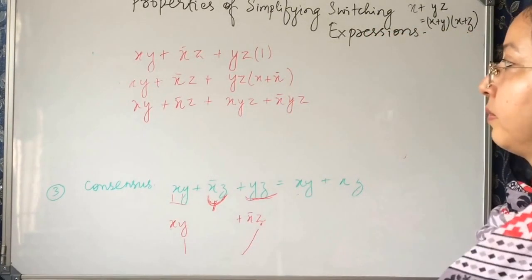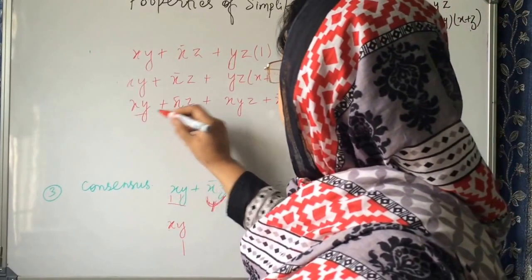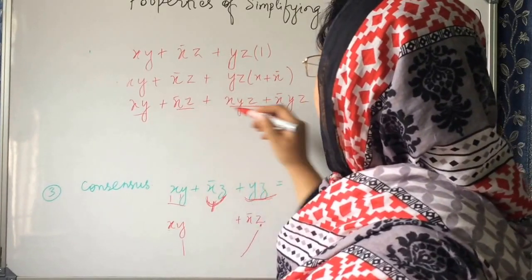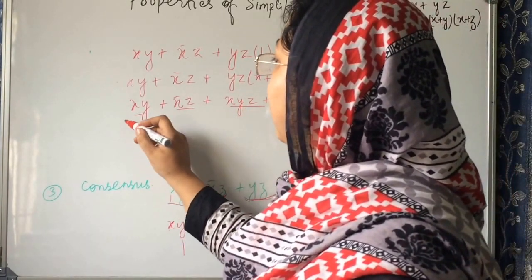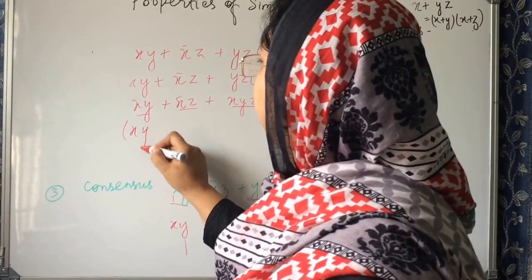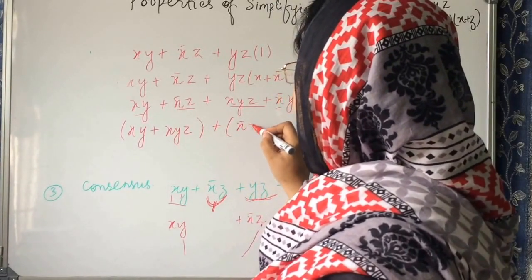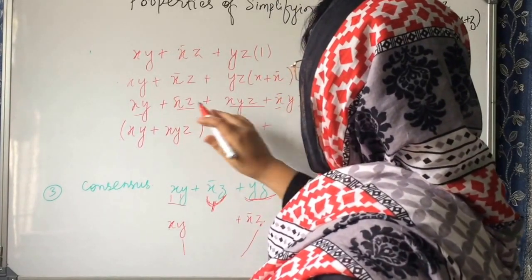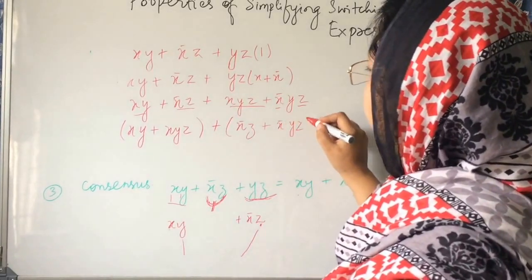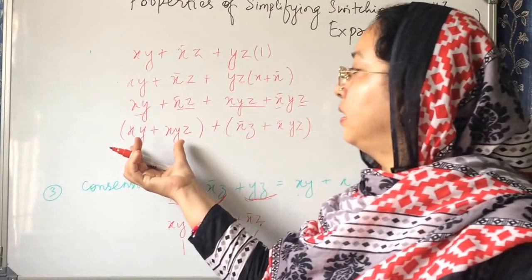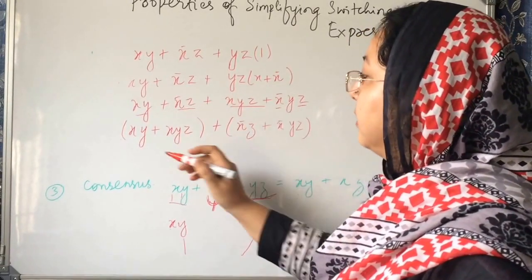xy plus x bar z plus xyz plus x bar yz. We can parenthesize it like this. xy plus xyz plus x bar z plus x bar yz. I am making group of this. This group will contain this and this. And this group will contain this and this.